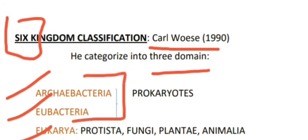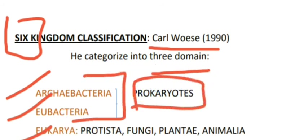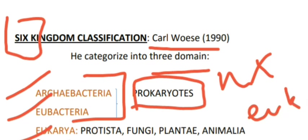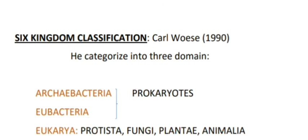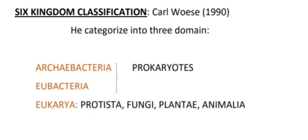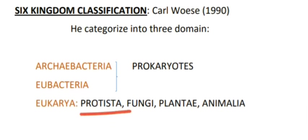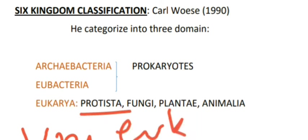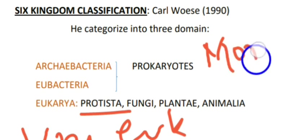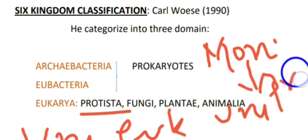Archaebacteria and Eubacteria are prokaryotes — they have no well-defined nucleus. Under Eukarya, the eukaryotes are grouped, which includes Protista, Fungi, Plantae, and Animalia. An important point is that Protista consists of unicellular eukaryotes, while Monera consists of unicellular prokaryotes.